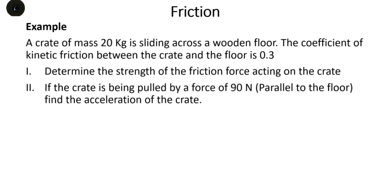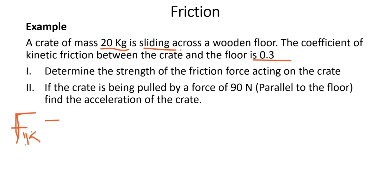Let's look at some examples. A crate of mass 20 kg is sliding across a wooden floor. The kinetic friction between the crate and the floor is 0.3. Determine the strength of the friction force acting on the crate. From the previous section, Fk — kinetic friction — equals μk, the coefficient of kinetic friction, times Fn, the normal force.